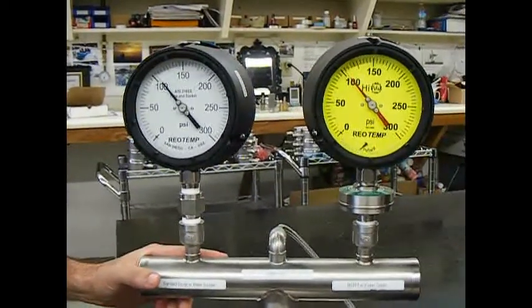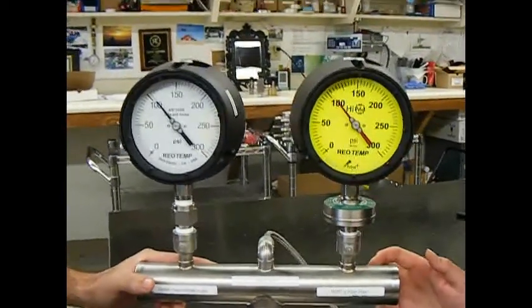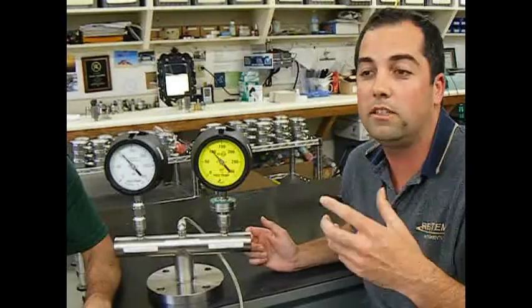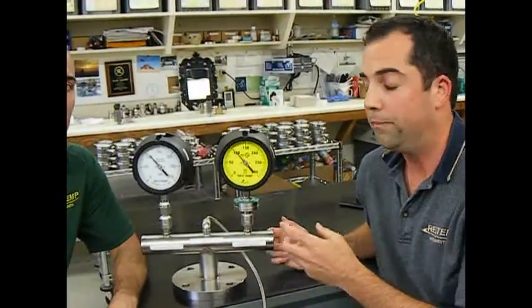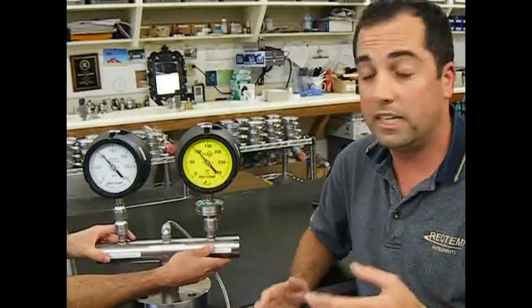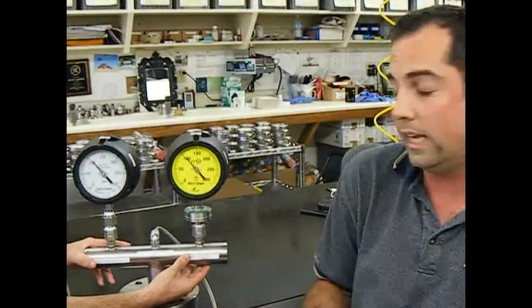On the left here, this is not just a plain diaphragm seal. We've actually embedded a proprietary mechanism inside the gauge above the diaphragm in order to fully slow the process to the point where it's not damaging the gauge. What you saw on the outside here was the final effects of pulsation, the pointer fluttering significantly, and you saw that more so in the gauge on the right.